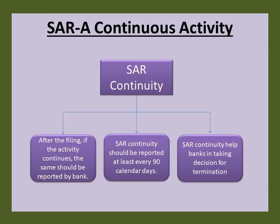The next question is whether SAR filing is a continuous process or a one-time process. One purpose of filing a SAR is to identify violations or potential violations of law to the appropriate law enforcement authorities for criminal investigation. If this activity continues over a period of time, such information should be made known to law enforcement and the federal banking agencies. Certain regulators have suggested that banks should report continuing suspicious activity by filing a report at least every 90 calendar days.